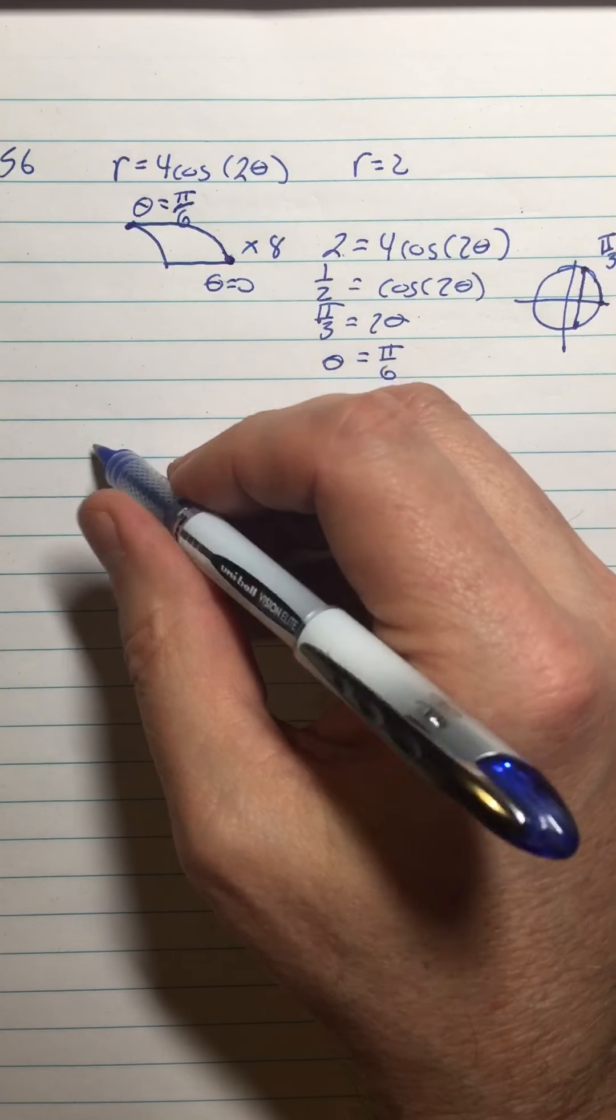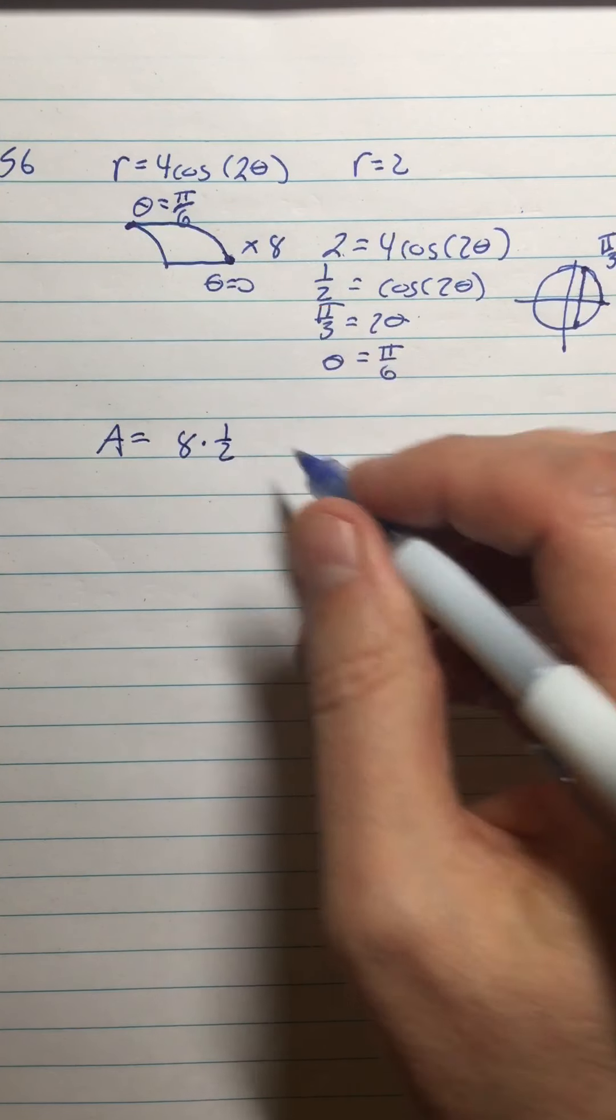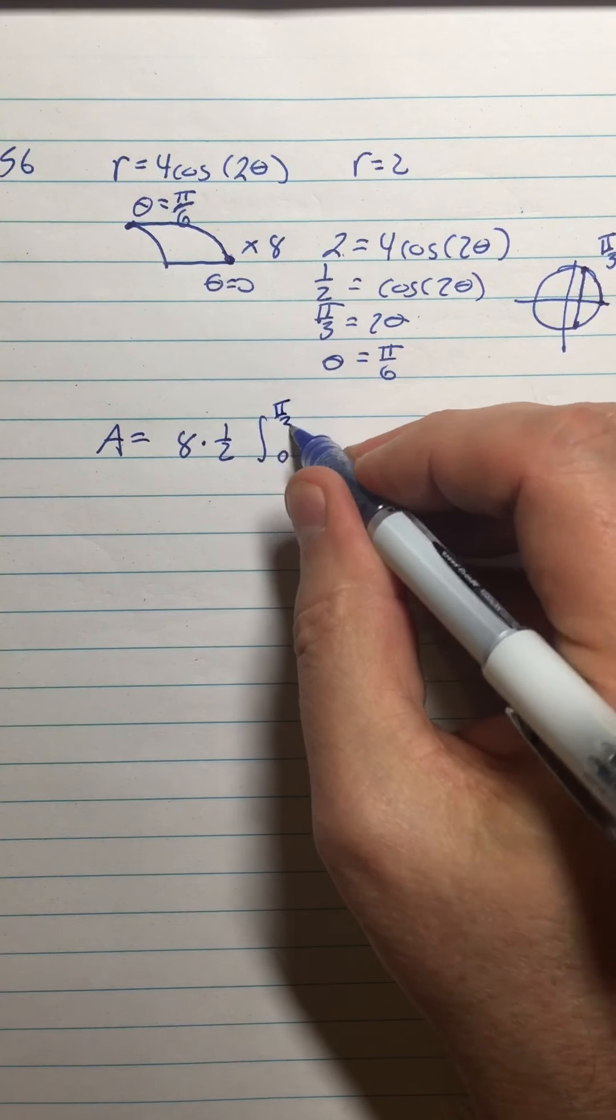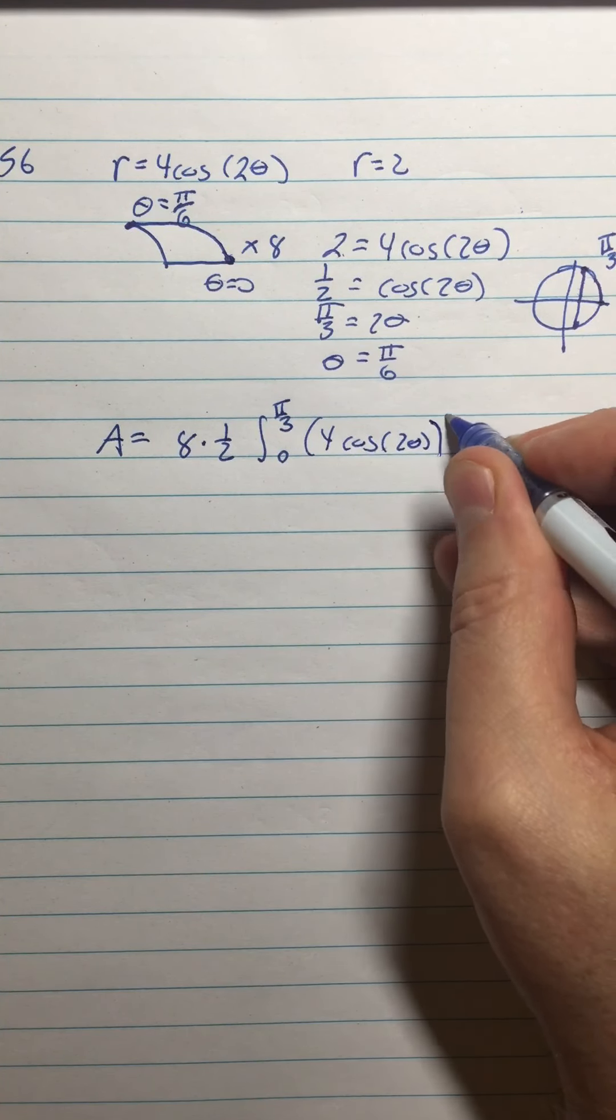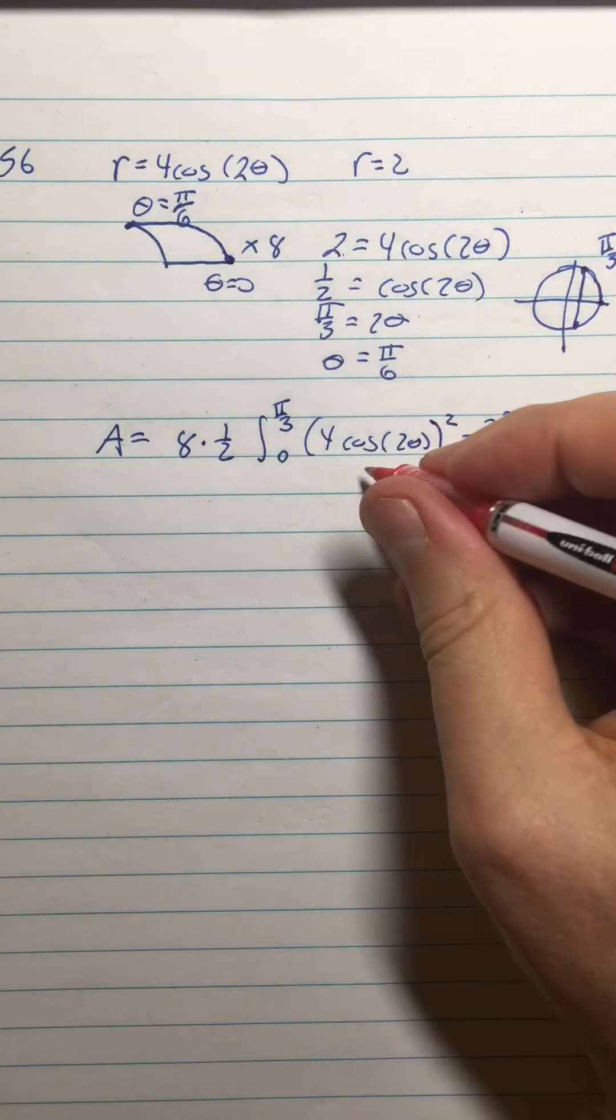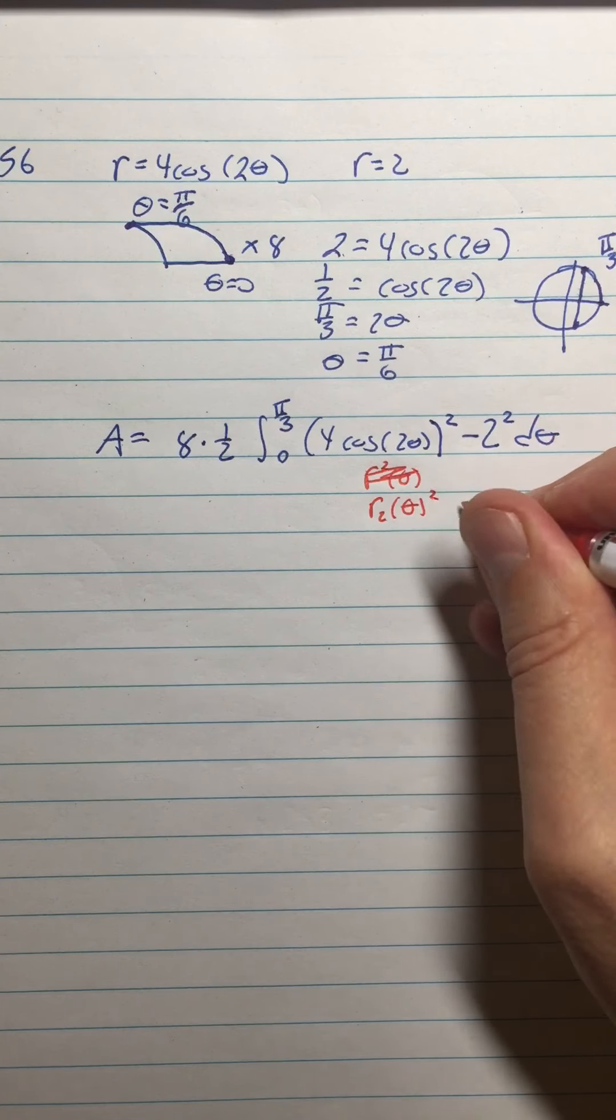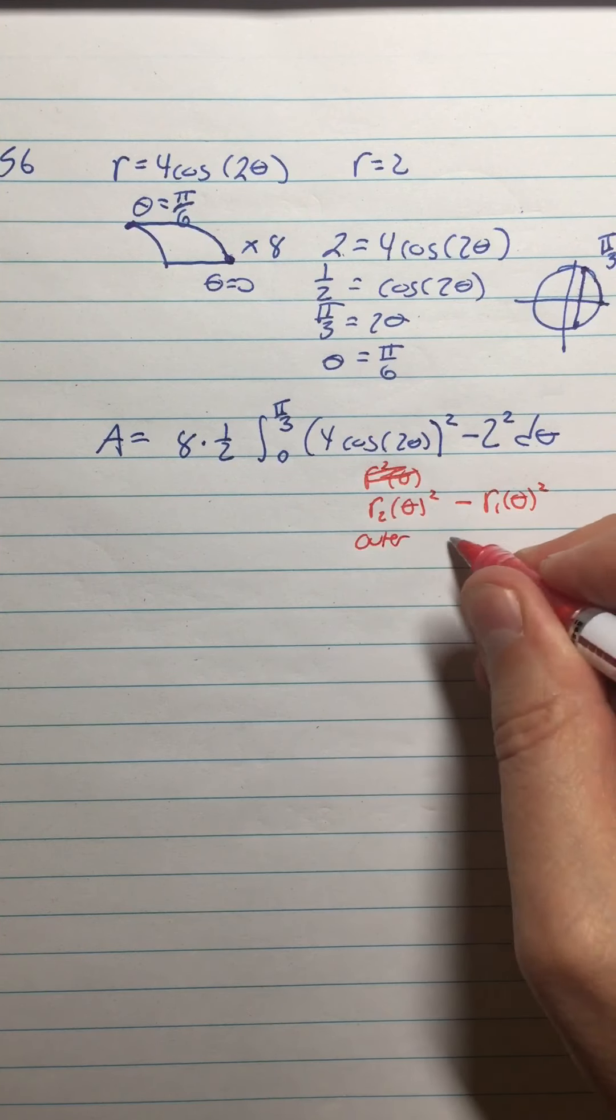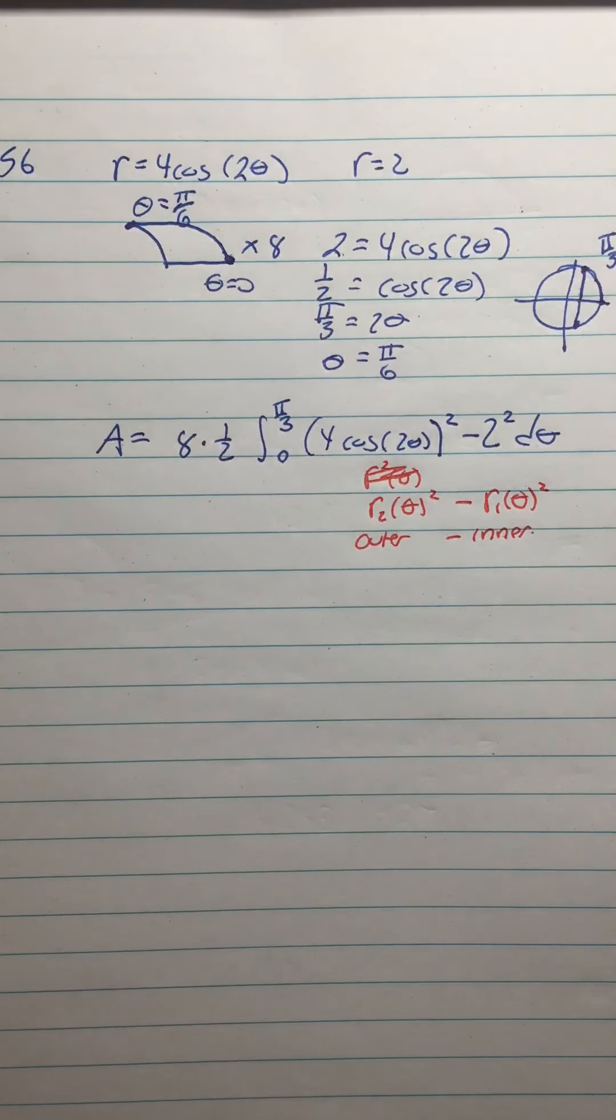Now being armed with the fact that this point is theta equals zero and this point is theta equals pi over six—and this is always going to be the real challenge with these, finding out what these thetas are—then the area is going to be eight times one half, from the formula, integral from zero to pi over three of 4 cosine of 2 theta squared minus 2 squared d theta. This is your r2 of theta squared minus r1 of theta squared, the outer function minus the inner function. I put the rose function first because it's farther from the origin than the circle is.